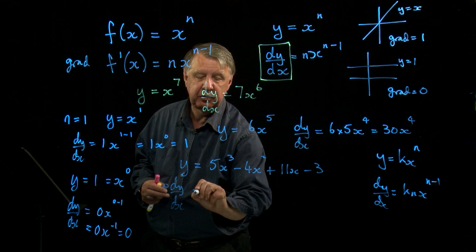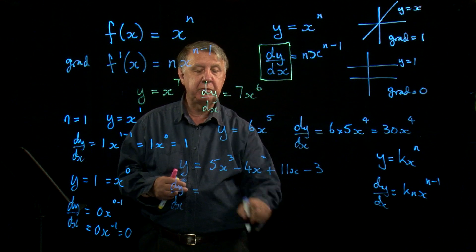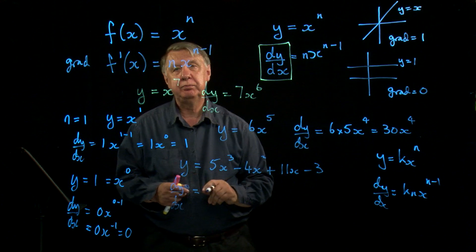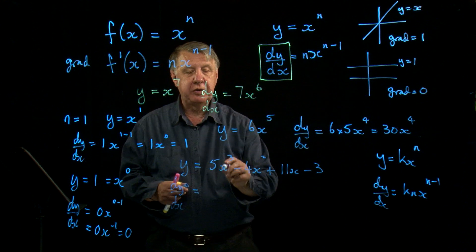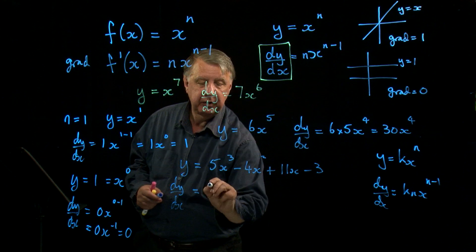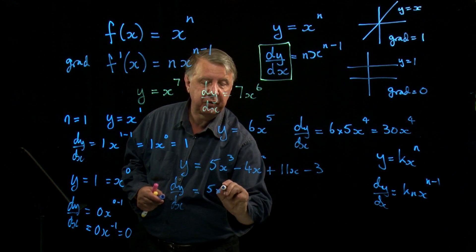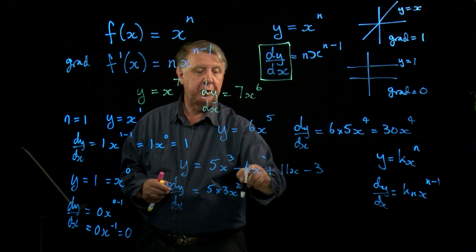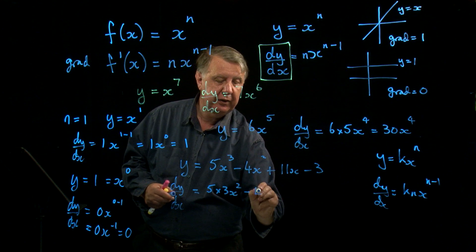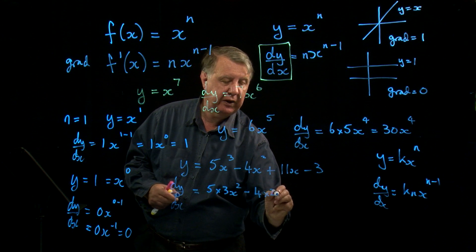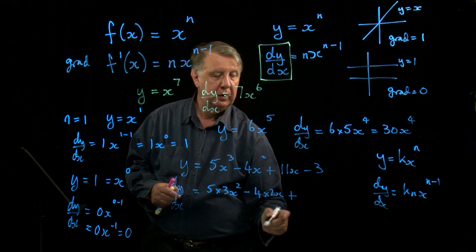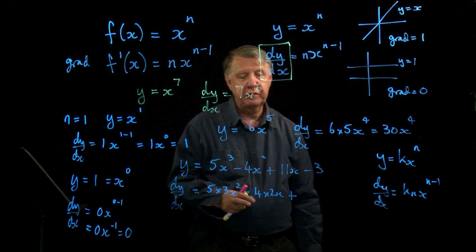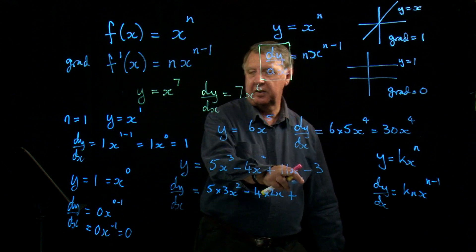If I want to differentiate, I differentiate term by term as I'm going along. So 5x cubed is 5 times 3x squared. 4x squared is 4 times 2x. Now, think about what happens with 11x. That's easy, isn't it?